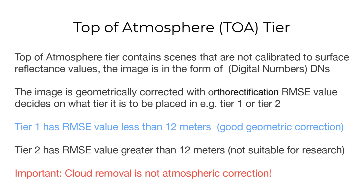Tier 1 has an RMSE value less than 12 meters, which is good and preferable for research. Tier 2 has an RMSE value greater than 12 meters, which is not suitable for research. You can also manually apply calibration to this tier using an atmospheric correction module that will convert the DNs into reflectance.